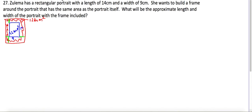So our original portrait has an area of 9 times 14, which is 126. But our new portrait with the frame included has an area of, well we don't know what the extra amount is. So 9 plus x times 14 plus x is equal to 252.